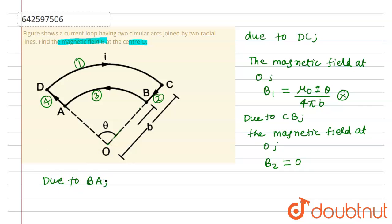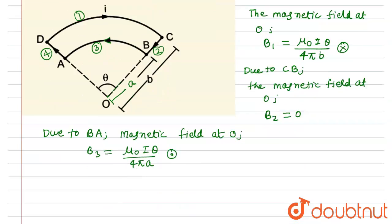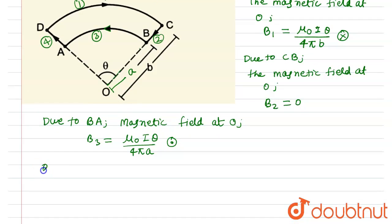Due to BA, the direction of current is now reversed as compared to DC, so the magnetic field at O will be B₃, which equals μ₀Iθ/(4πa), but this is in outward perpendicular direction.